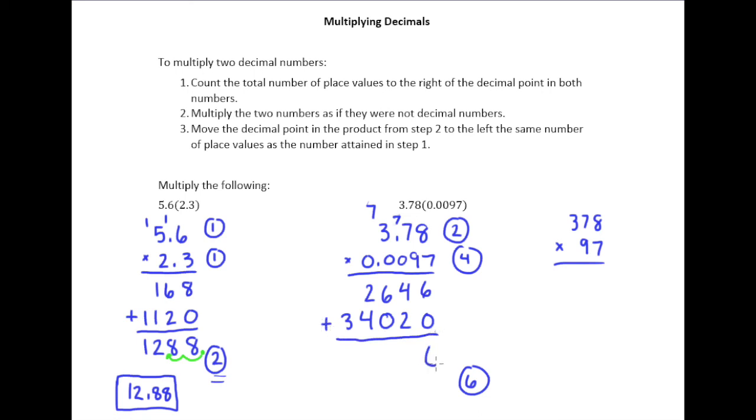So 6 plus 0 is 6, 4 plus 2 is 6, 6 plus 0 is 6, 2 plus 4 is 6, and then 3. So I have 36,666.